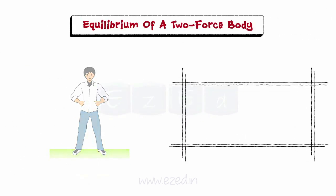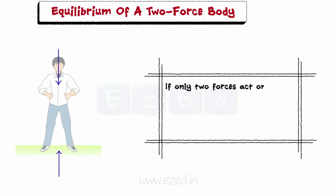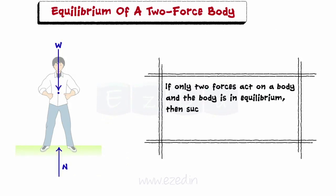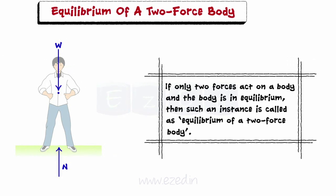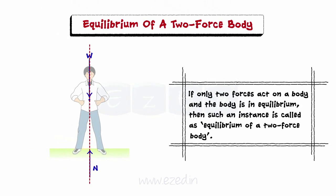If only two forces act on a body and the body is in equilibrium, then such an instance is called as equilibrium of a two-force body. The two forces would be of equal magnitude, opposite in direction and along the same line of action — that is, they are collinear.